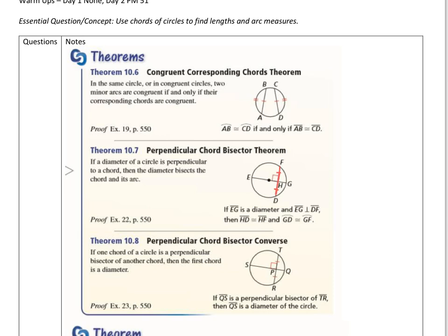So the diameter bisects the chord, and the other part of it is this FG arc will be congruent to the DG arc. So not only does it do the chord, but it also bisects the arc.